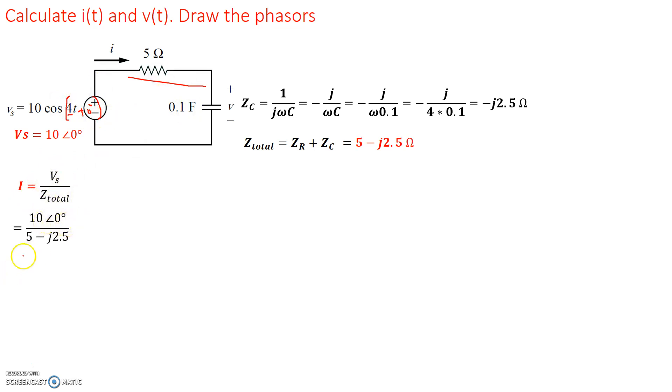And that's 10∠0 degrees divided by 5 - j2.5. Now this phasor representation is in the polar coordinates. This is in the Cartesian coordinates. So let's convert this to its polar form. And that basically gives us square root of 5 squared plus 2.5 squared. And that basically gives us a total of 5.59 with an angle of -26.57.